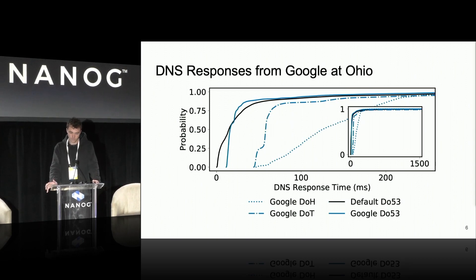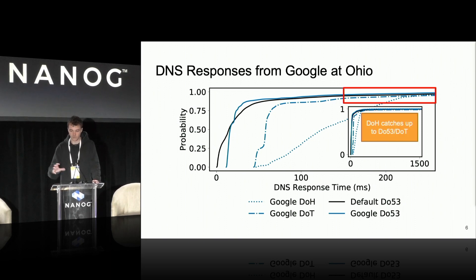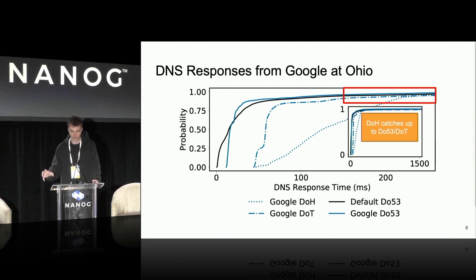With Google, the same idea — we have a vantage point on Amazon EC2 in Ohio, comparing all protocols with Google's resolver and also against the local resolver provided by Amazon. We're seeing similar behavior: in these tail response times, DOH is catching up to the different protocols. It's not strictly the case that you get slower response times; rather, within about 250 milliseconds, the protocols are all catching up to each other.